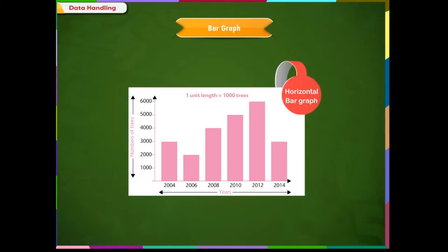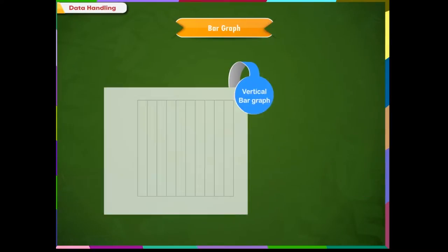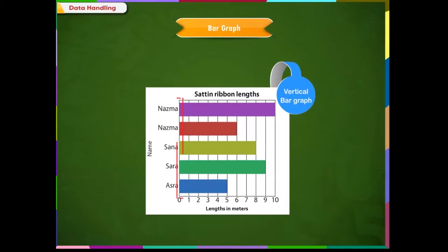If the descriptions are on the horizontal axis, then the bars will be vertical. And if the descriptions are on the vertical axis, then the bars will be horizontal.